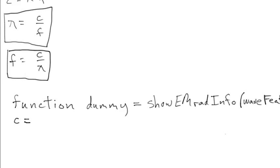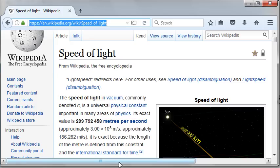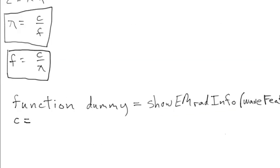Writing it up: c equals, and according to that website, c = 299,792,458 — that's 2.99,792,458. Let me make sure I get that right.